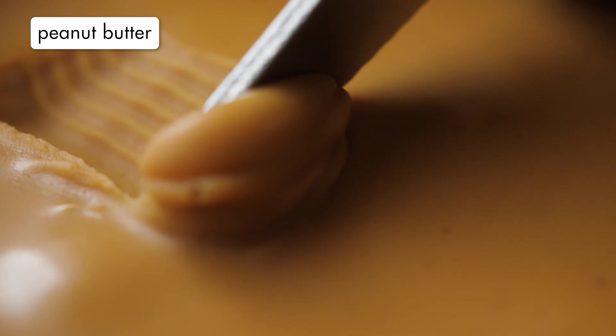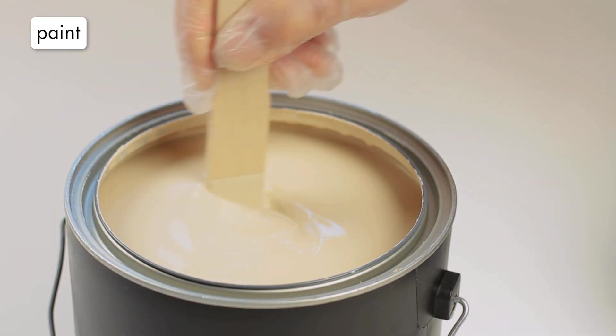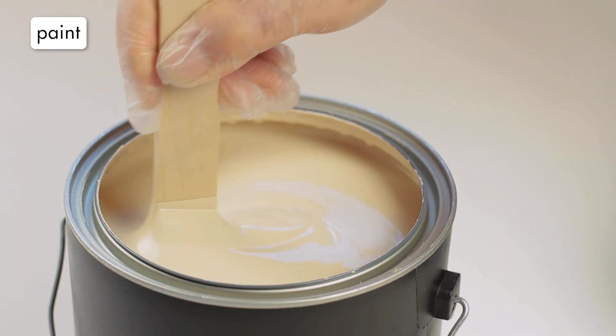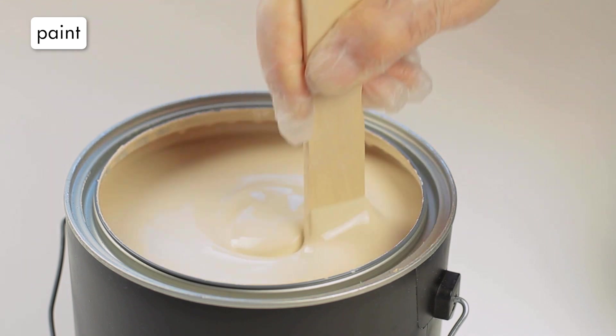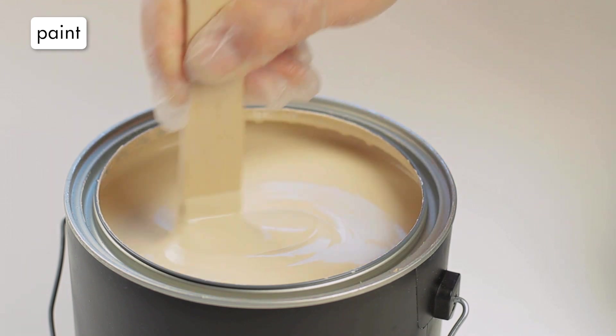Some other examples of suspensions are an aerosol spray, peanut butter, and paint. If paint is not stirred, the suspension particles of pigment will settle to the bottom of the can.